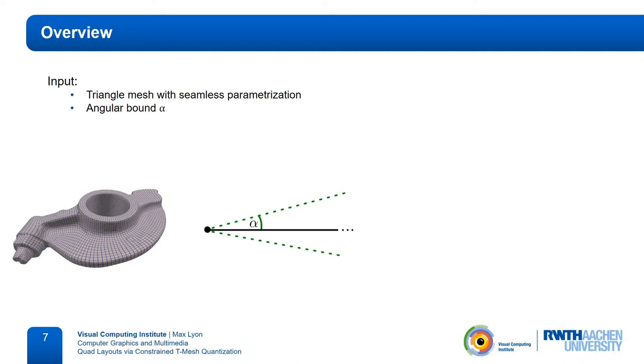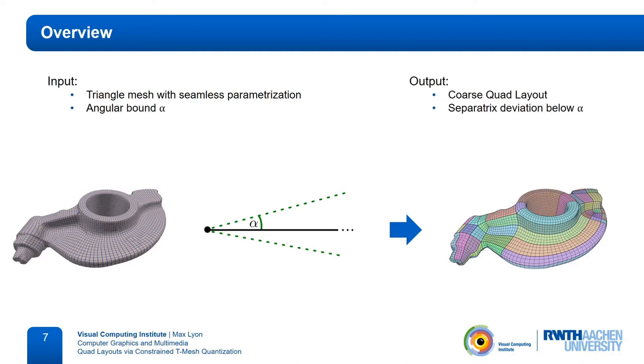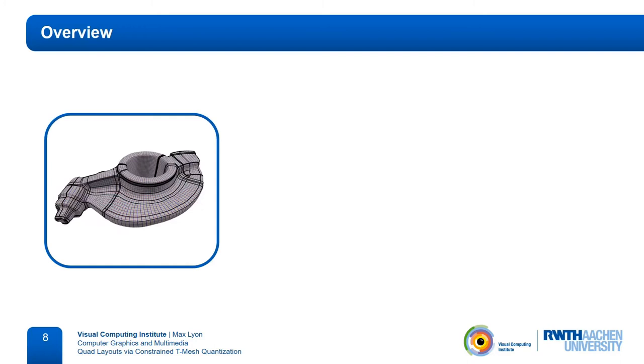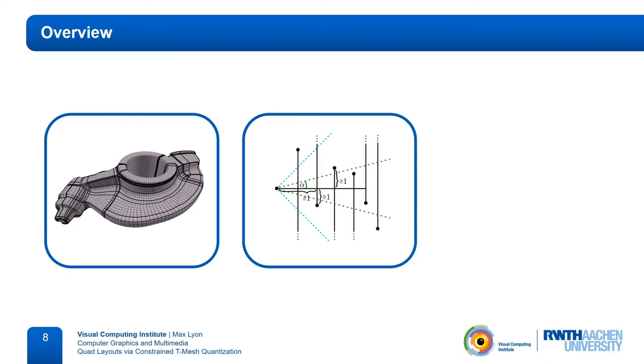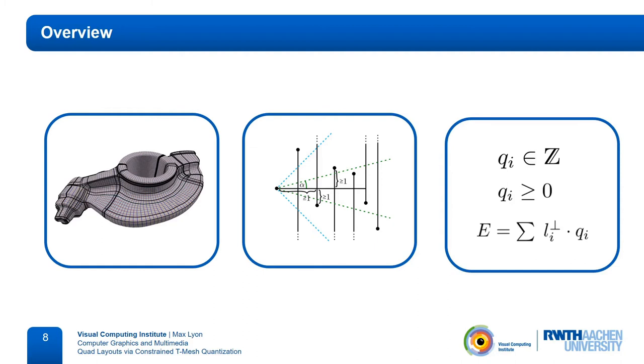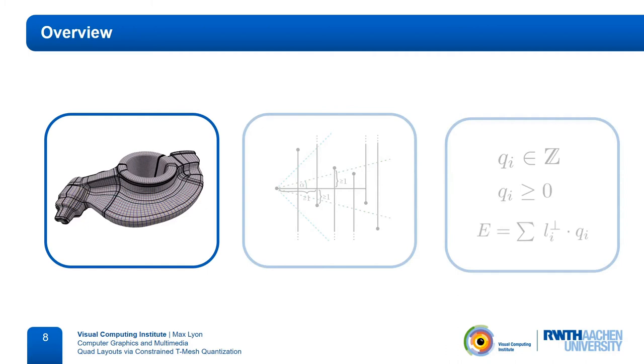Okay, so the goal of our method is, given a seamless parameterization and an angular bound alpha as input, compute a coarse quad layout in which every separatrix deviates from the isolines of the input parameterization by at most alpha. Our algorithm achieves this goal in three steps. First, we generate a t-mesh. Then we specify constraints that enforce validity and quality. And finally, we find a quantization of the t-mesh that adheres to those constraints by solving an integer linear program. Let's start with the t-mesh.